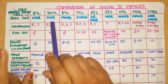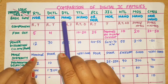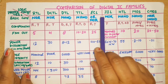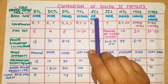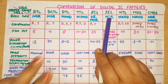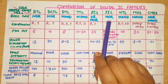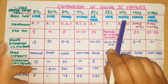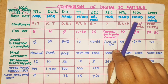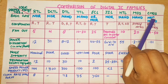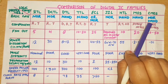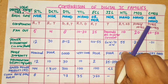The first property is the basic gate. RTL basic gate is NOR. DCTL basic gate is NOR. DTL basic gate is NAND. ECL has two outputs — one for OR and one for NOR. I2L basic gate is NOR. HTL basic gate is NAND. MOS basic gate is NAND. CMOS basic gate can be NOR or NAND.